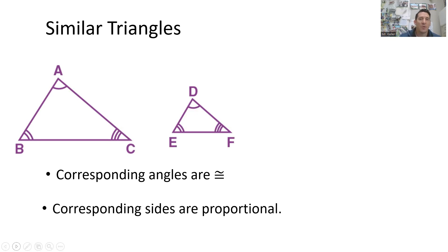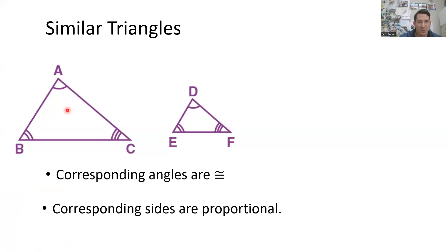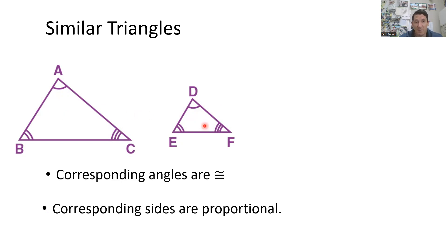A similar triangle means that the corresponding angles are congruent, and the corresponding sides are proportional. So basically what we have here are two triangles, ABC and DEF. They look the same - it's just one is bigger than the other. It looks like DEF is a mini-me version of triangle ABC. They have the same angle measures, but the sides are smaller on one of them.